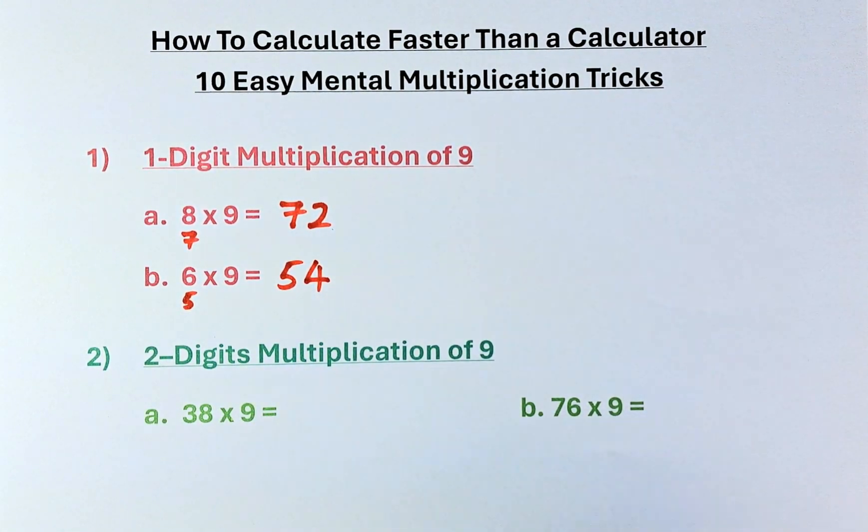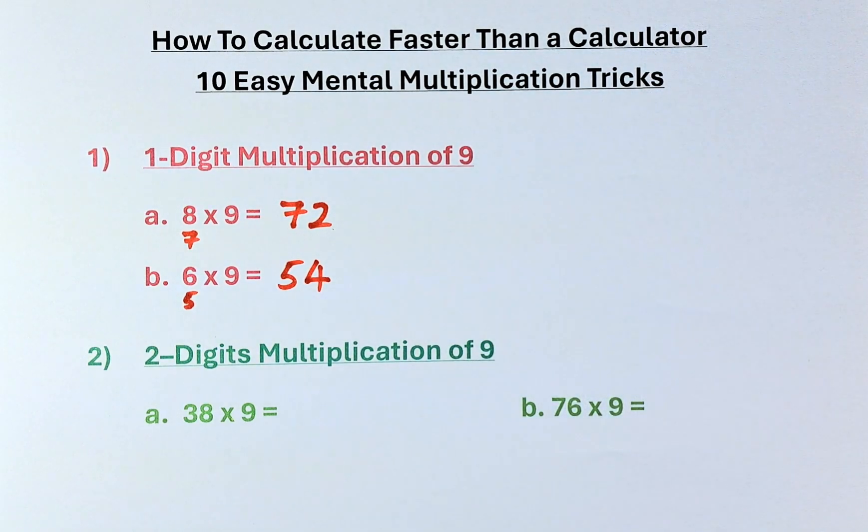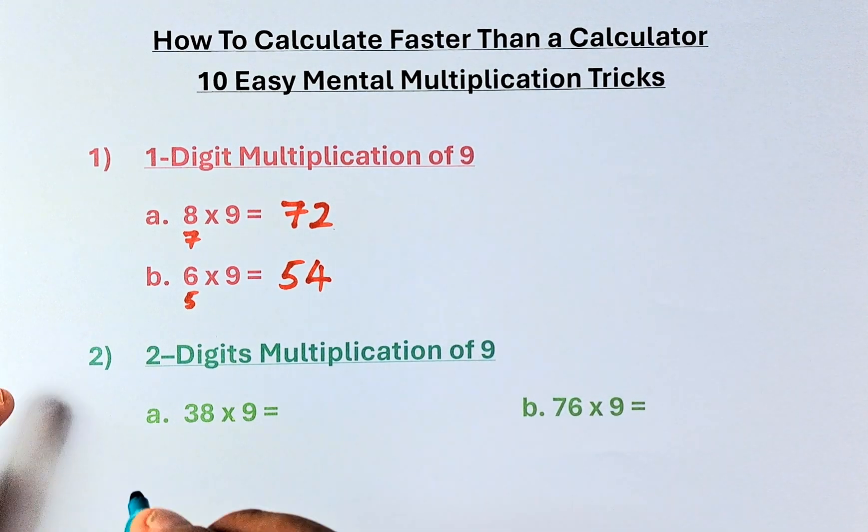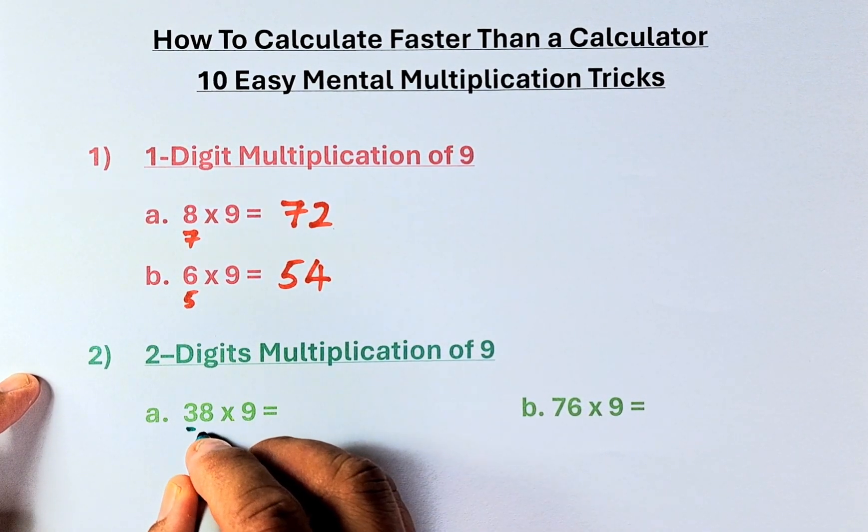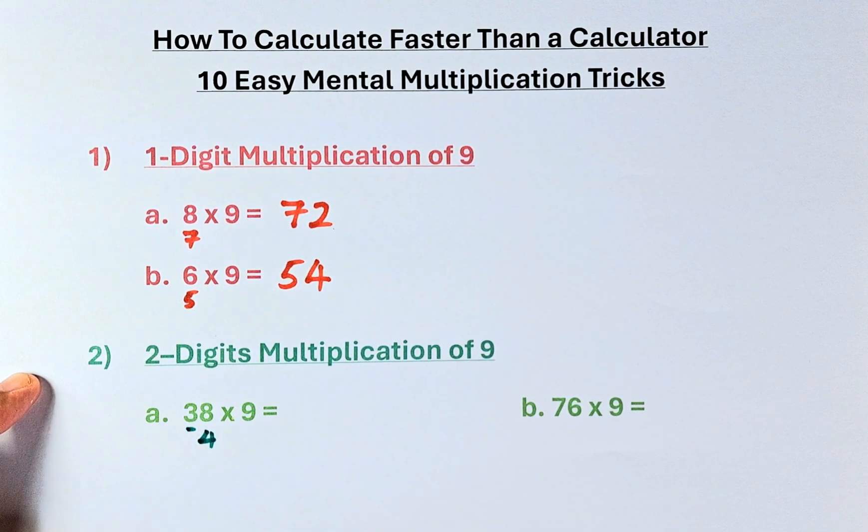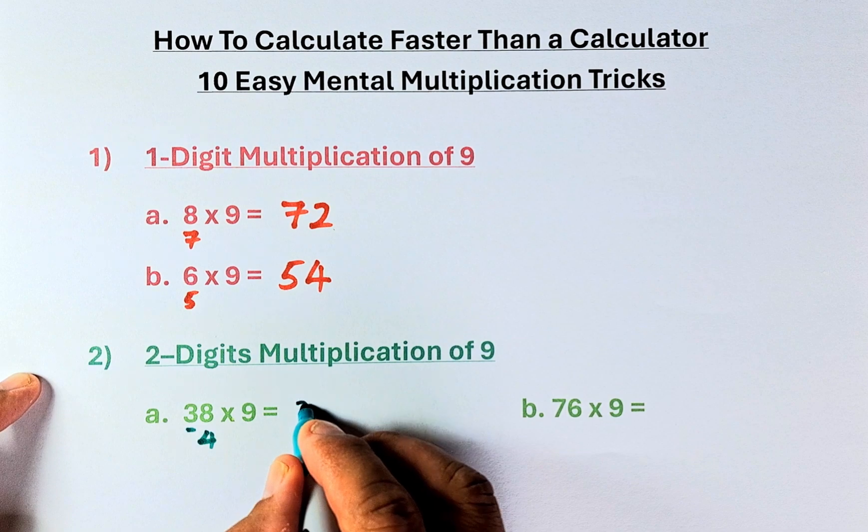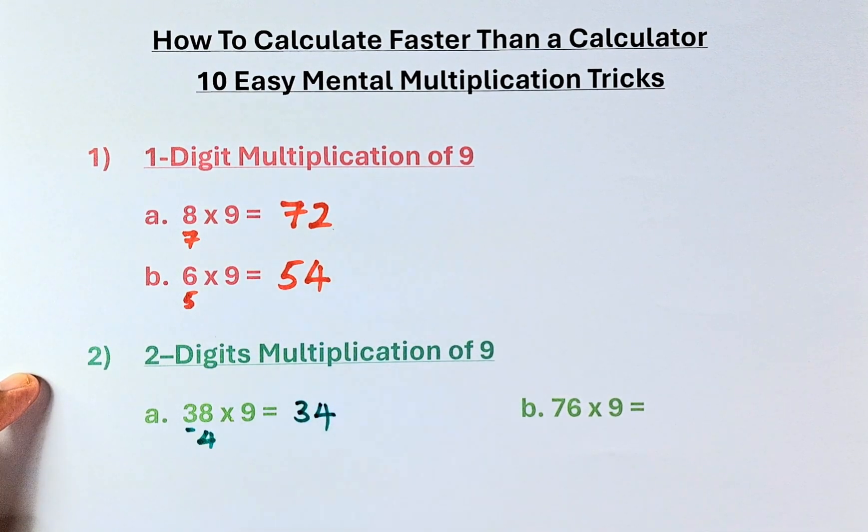Now to number 2. Multiplication of 2-digit, multiplication of 9. This is slightly different. Previously you reduced by 1, now you increase by 1. So the first digit is 3, you increase by 1, becomes 4. So what you do now is you take 38 minus 4, that becomes 34.